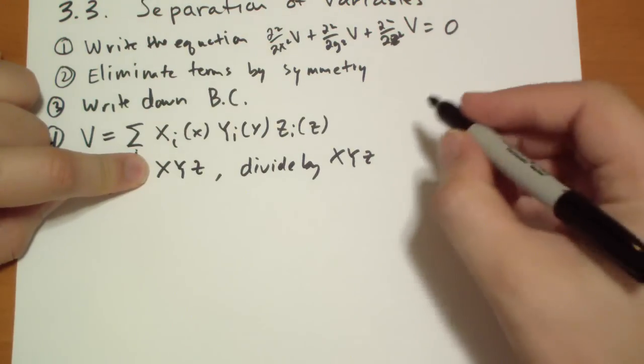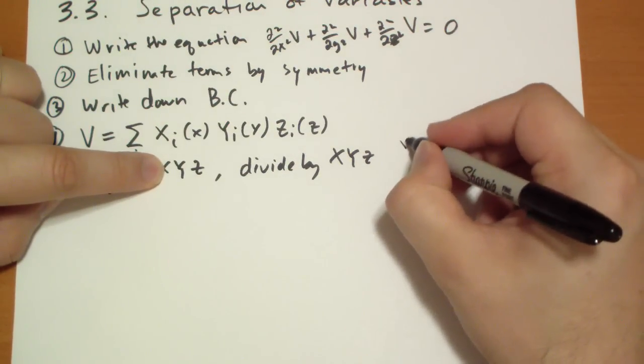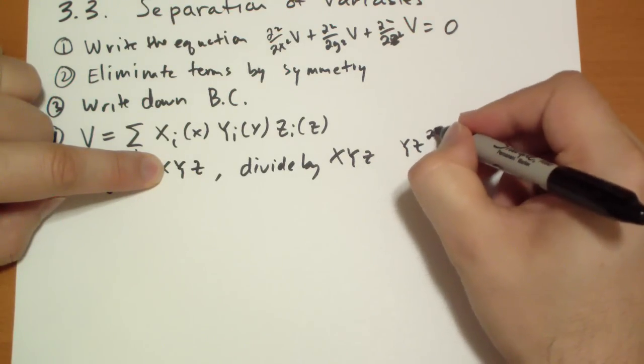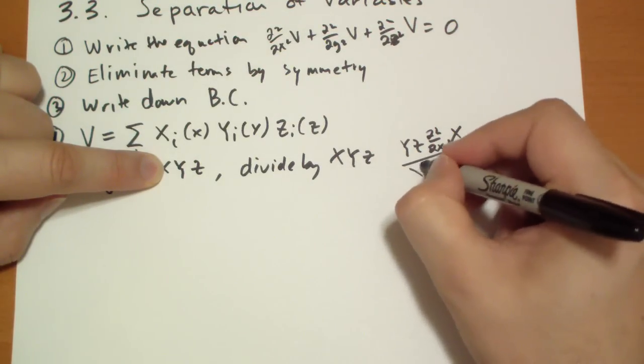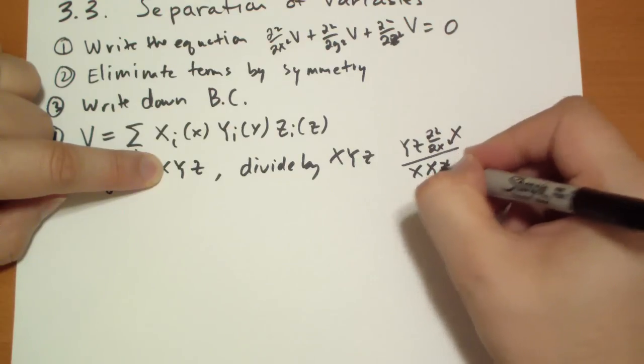So you have Y, Z, then you have to leave the X in there. And then you divide by X, Y, Z, so these terms cancel.